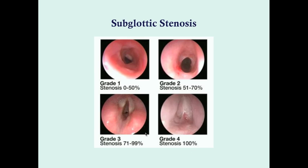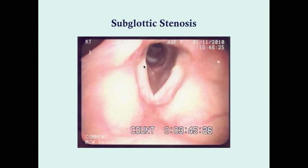Grades 3 and 4 typically require surgery and symptoms are significantly worse. Many grade 1 and 2 cases will not require surgery, and the subglottic stenosis symptoms will generally remit as the airway grows with the child. Here is another stenosis right at the level of the vocal cords — you can see the stenosis here, which somewhat resembles esophageal rings.